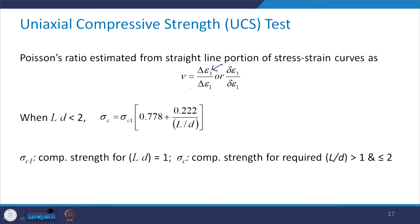We can also obtain the Poisson's ratio. As per its definition, the ratio of lateral strain to axial strain defines the Poisson's ratio. This can be estimated from the straight-line portion of the stress-strain curve.